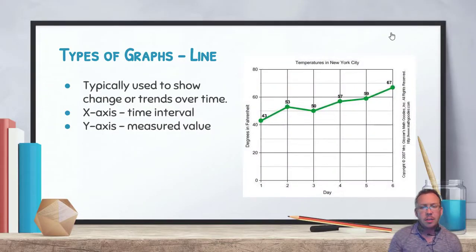A line chart is typically used to show changes or trends over a period of time. The x-axis is typically the time interval, whether it be days, minutes, seconds, weeks, months, years, whatever, and the y-axis is the measured value again. So taking a look at the graph, we have temperatures in New York City, and as you can see on the x-axis we have days, so there's time taking place on the y-axis, degrees in Fahrenheit. So you can make a nice little comparisons there. This is the one we would typically use to show changes over a period of time.